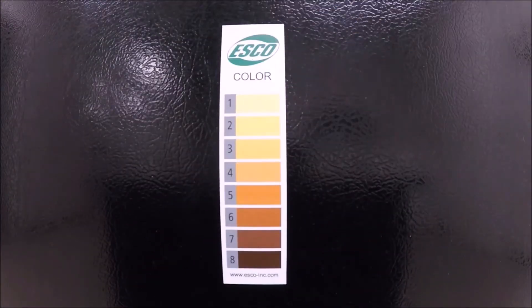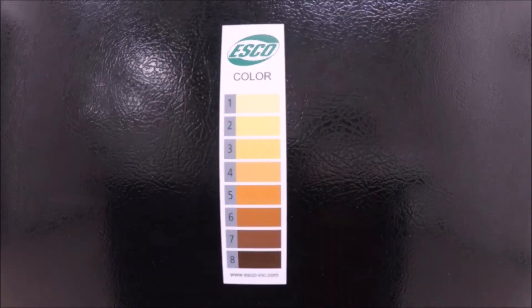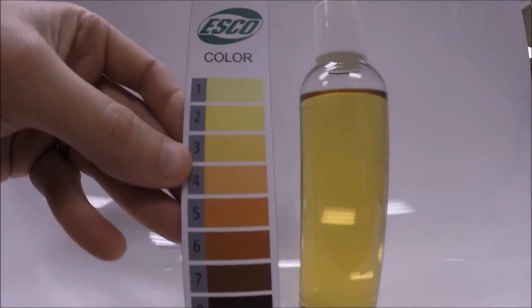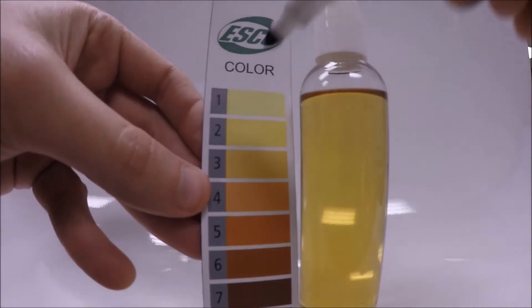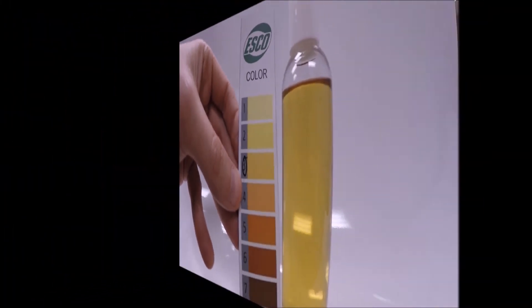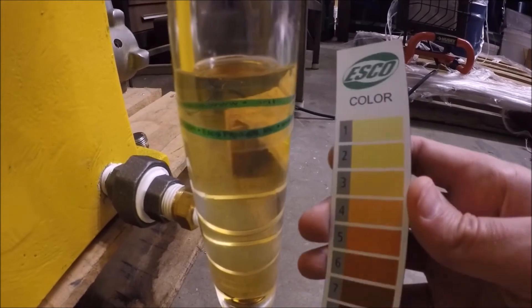The ESCO color magnet gives users a scale to which they can measure and monitor these changes over time. Match the color of the oil to the closest corresponding color on the ESCO color scale. Having recorded the color, users can identify when a drastic change has occurred and investigate the cause.